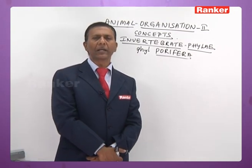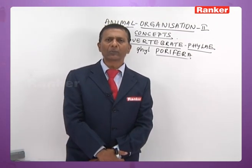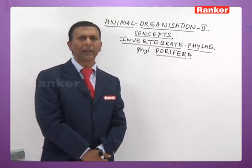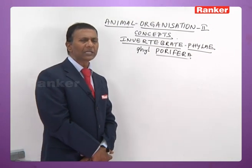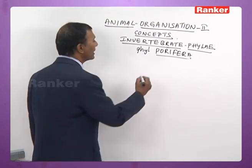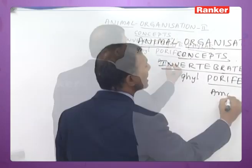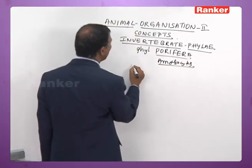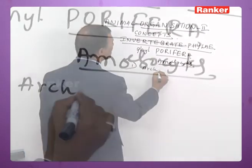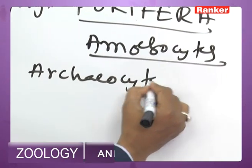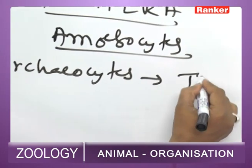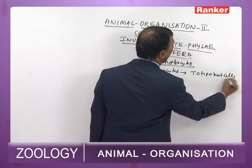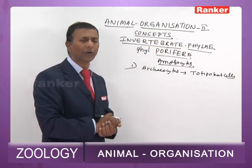Regarding symmetry, simple sponges are radially symmetrical while higher sponges are asymmetrical. The mesohyle is deposited with different kinds of amoebocytes. The most important amoebocytes of the mesohyle are archaeocytes, which act as totipotent cells for the Porifera.